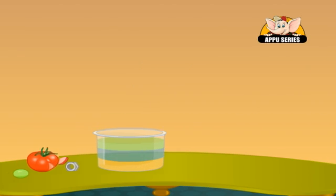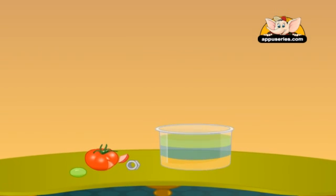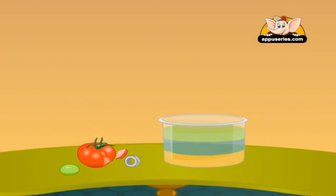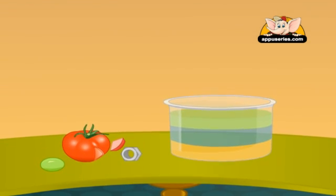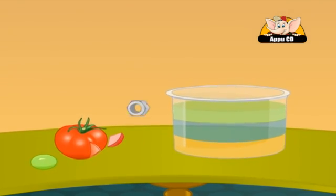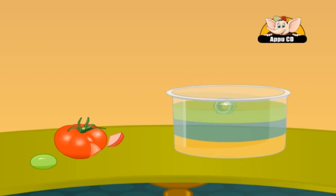You will notice that the three liquids in the container separate into three layers and float on each other. Now add the objects we have selected to try to float.